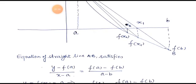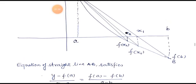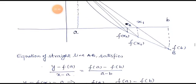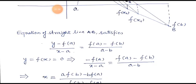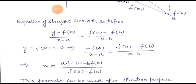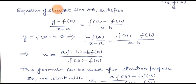The equation of the straight line through (A, f(A)) and (B, f(B)) is: [y - f(A)] / (x - A) = [f(A) - f(B)] / (A - B). Here y = f(x). Equating and putting y = 0, we get: -f(A) / (x - A) = [f(A) - f(B)] / (A - B).